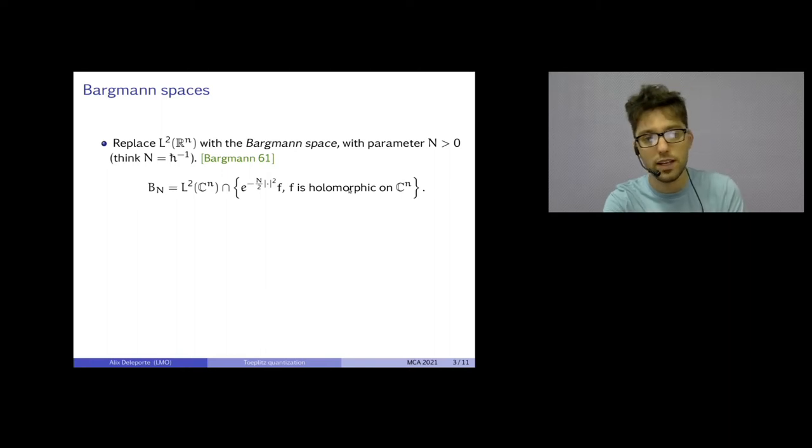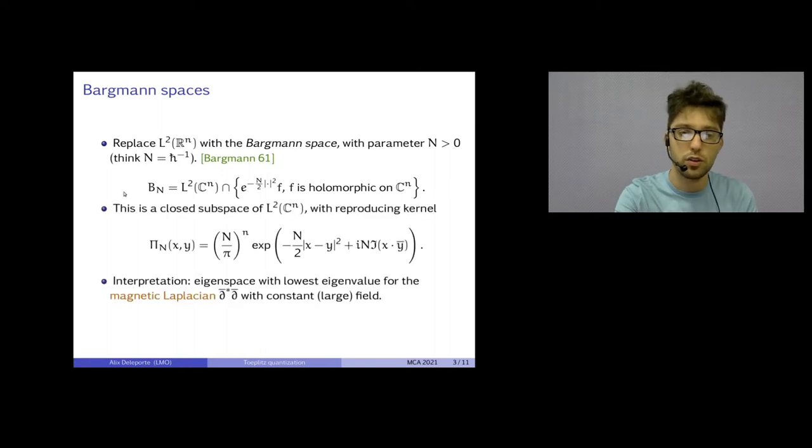There's a parameter in this exponential weight, and you must think that this parameter is the inverse semi-classical parameter. This space, this subspace of L2 is a closed subspace. Everything is nice. It has a reproducing kernel. This pyn defines a function and it defines an integral operator which is an orthogonal projection from L2 of C^n to Bn, which I'm going to call the Szegő or Bergman projector.